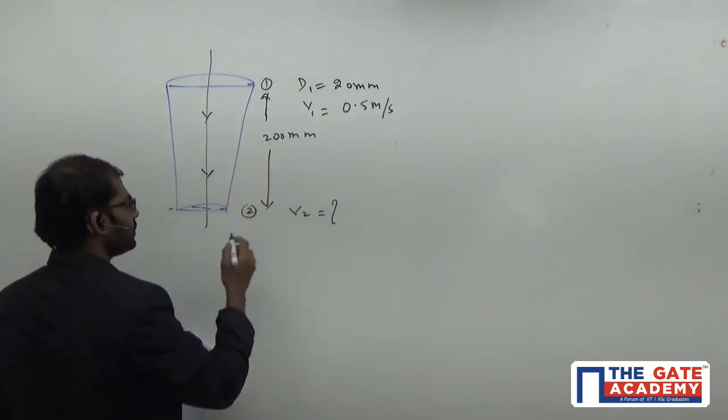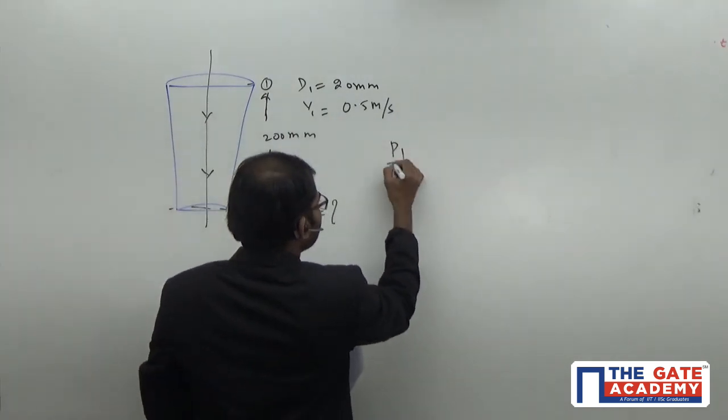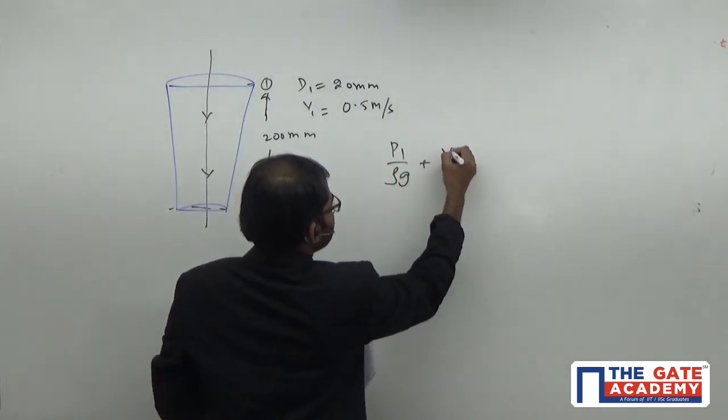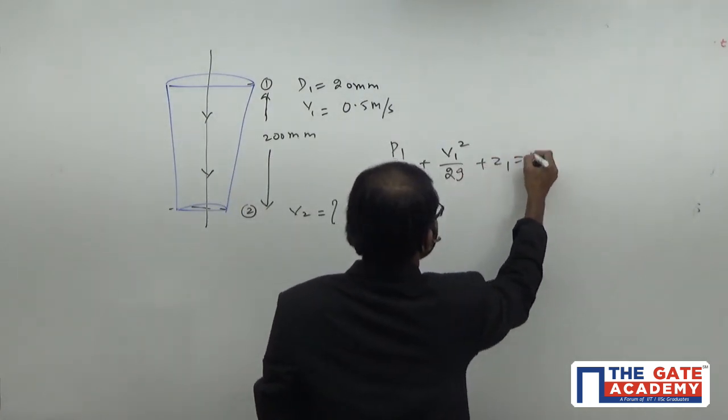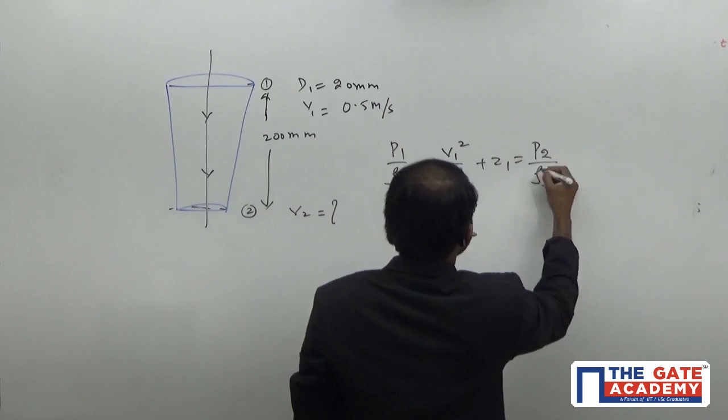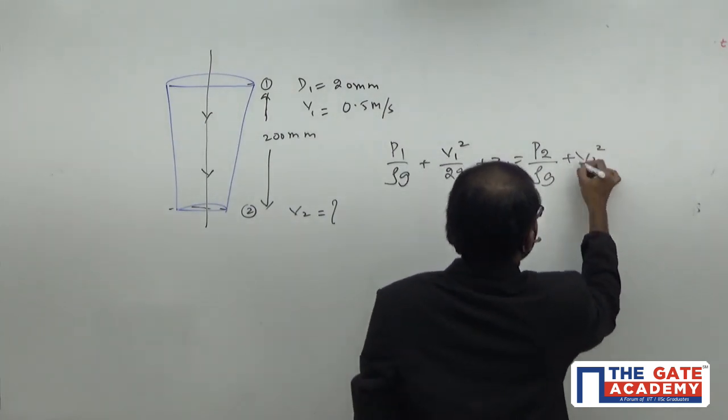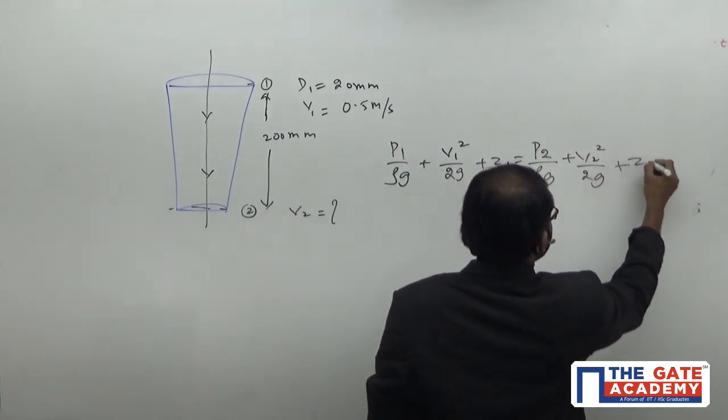Bernoulli equation between 1 and 2 is equal to given by P1 by rho g plus V1 square by 2g plus z1 is equal to P2 by rho g plus V2 square by 2g plus z2.